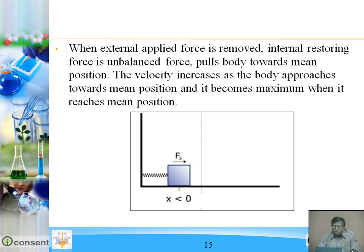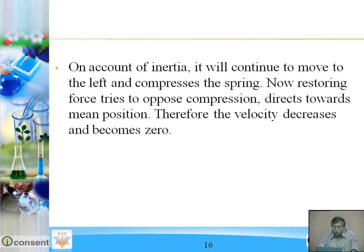When the external applied force is removed, only the restoring force is unbalanced, and it pulls the body towards the mean position. But at the mean position, due to the inertial property — inertia means to maintain the state or to oppose change — the block moves towards the left. When the spring is compressed, the restoring force opposes the compression and acts in the right-hand direction. When both forces become equal there is an equilibrium position, and the block again moves towards the mean position, then right, then from right to mean position, from mean position to left, and so on. So it oscillates about the mean position.